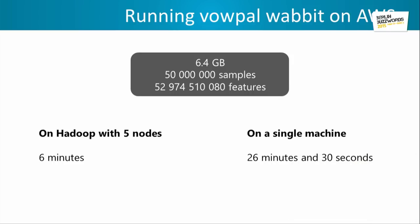I tried to do a benchmark — this was done yesterday at 2am so a bit rushed. With just 6 gigabytes, that's 50 million examples, running on 52 billion features after combining features. On a single machine — my laptop — I was able to run this with just online learning in 26 minutes. On Hadoop, it ran in 6 minutes. So it does speed up a lot. This was quite a small dataset, and on larger datasets it should really speed up your online learning pass for similar accuracy.